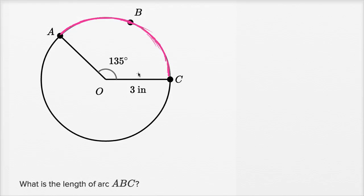So what is the length of that arc? Well, the first thing we could do is let's just think about the entire circumference of this circle. And then we could say, what fraction of the entire circumference is this arc? A big hint here is if we were to go all the way around the circle, that would be 360 degrees, but we're only going 135 of those 360 degrees.